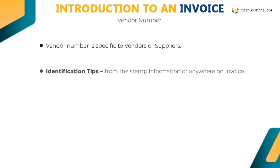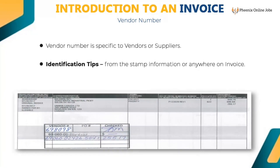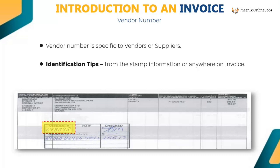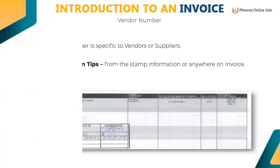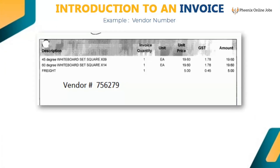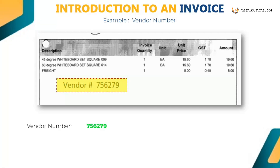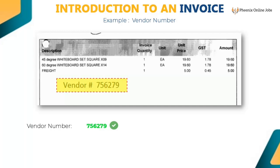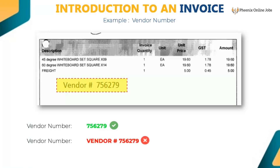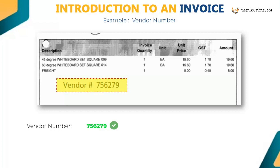Vendor number is specific to vendors or suppliers. It can be found from stamp information or anywhere on the invoice. Key from the keywords 'vendor number' or 'vendor.' For this example, the vendor number is 756279. Do not key words like 'vendor' or 'vendor number.' If 'vendor number' is already populated, then remove those words.